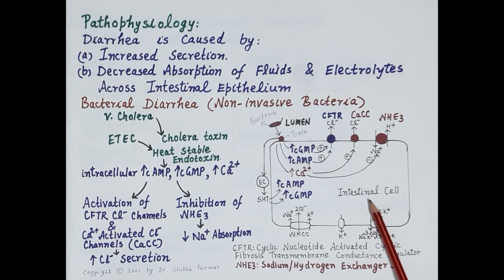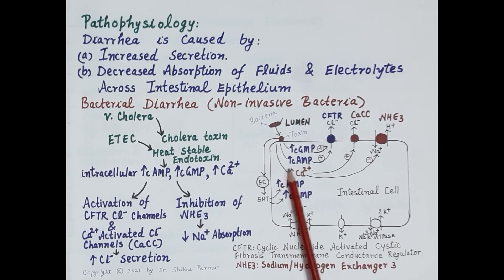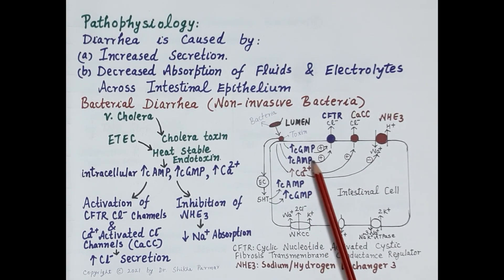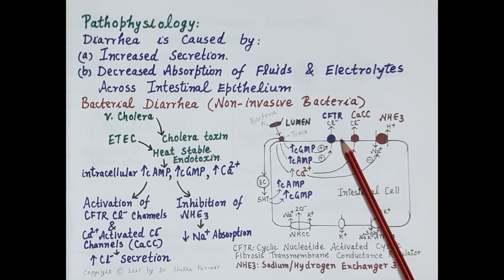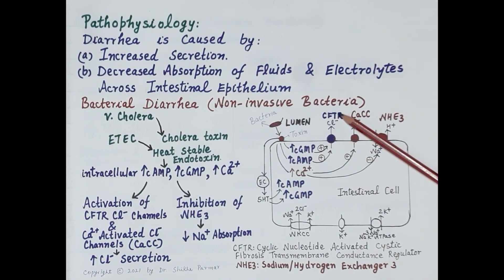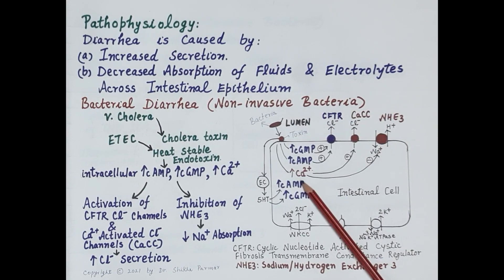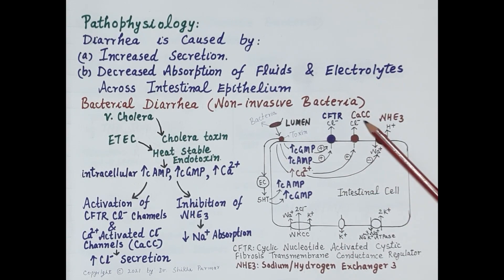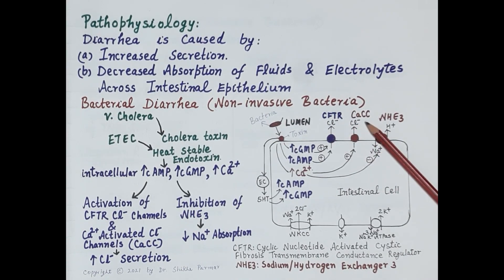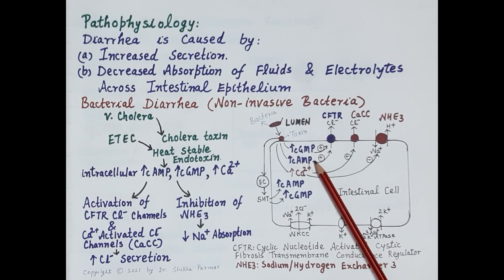The diagram shows an intestinal cell. Toxins from non-invasive bacteria increase intracellular levels of cyclic AMP, cyclic GMP, and calcium. Increased cyclic AMP and cyclic GMP activate CFTR chloride channels, which increase chloride ion secretion into the lumen of the intestine. Increased calcium increases activity of calcium-activated chloride channels, which further increases chloride secretion in the intestinal lumen.